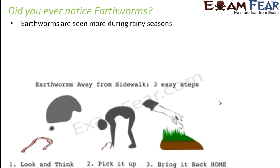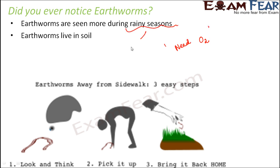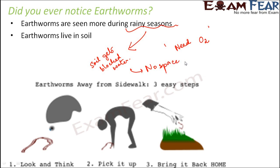Earthworms are seen more during the rainy season because they need oxygen to breathe. During the rainy season, the soil gets blocked with water — water occupies all the spaces, so there is no space left for air and therefore no oxygen within the soil. Since the organisms need oxygen, they come out on the surface to take in oxygen from the air.